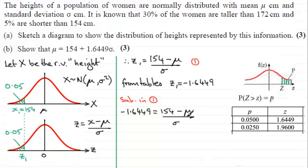And if I rearrange this then by multiplying by sigma I'll have minus 1.6449 sigma equals 154 minus mu. And if I add mu to both sides and add this term to both sides I'm going to end up with what we had to show. That is that mu equals 154 plus 1.6449 times sigma. Okay.